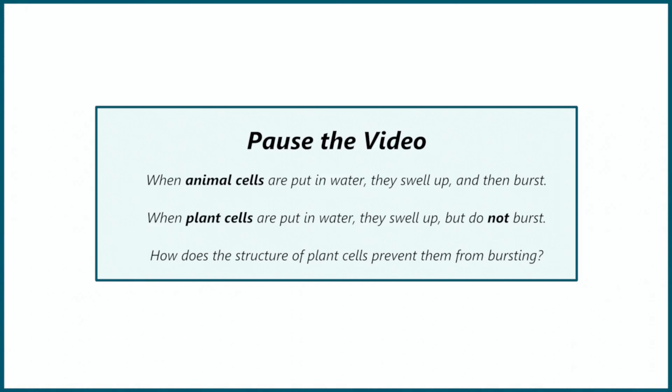Plant cells have a cell wall. This is rigid and strong. They still swell but the cell wall stops them from bursting.